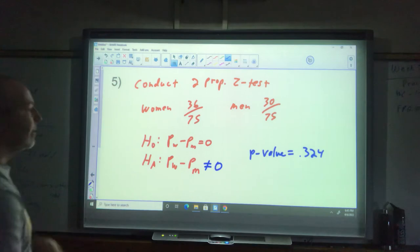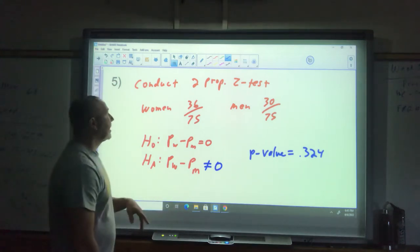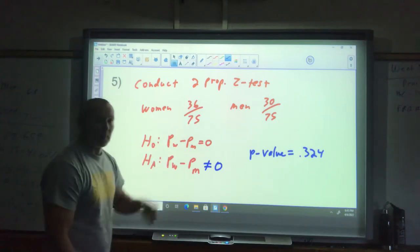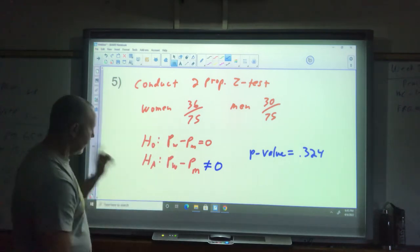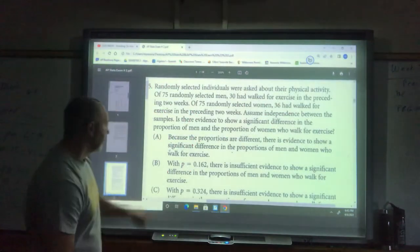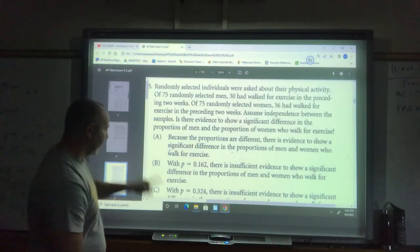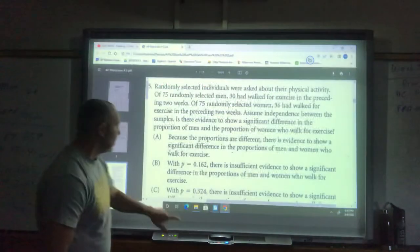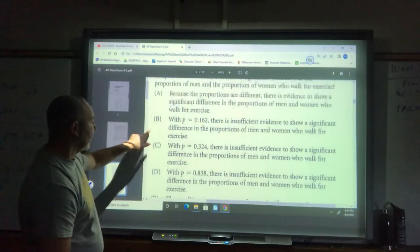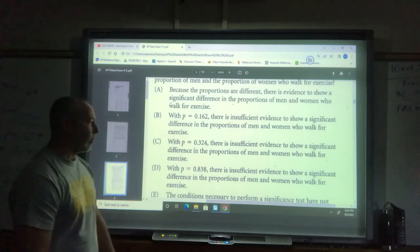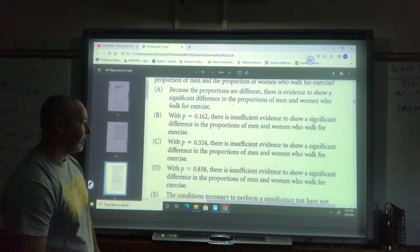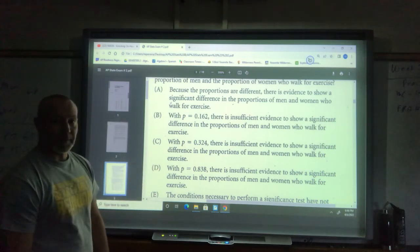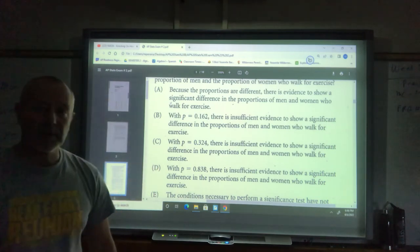What does that mean? That's high. That means we would fail to reject this and we would still be there. We did not find significant findings. With the p-value of 0.324, there's insufficient evidence to show a significant difference in the portion of men and women who walk for exercise. So that is number five. Thank you guys, I'll be back.